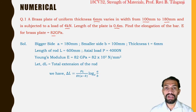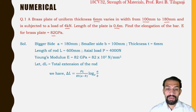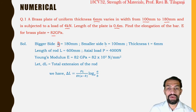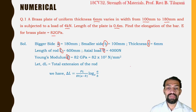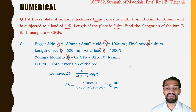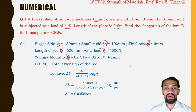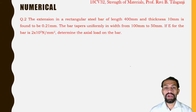Substituting all known values into the equation delta L = P·L / (E·t·(A−B)) · log_e(A/B), and performing the calculation, the elongation of the rod comes out to be 0.0358 mm.